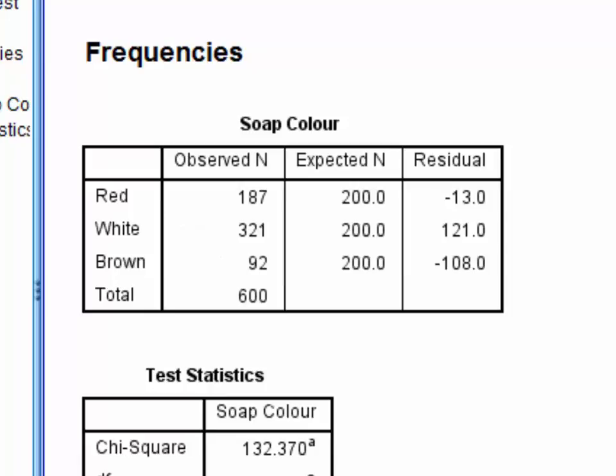Remember that if all three colors were equally popular, we would expect about 200 people to choose each color, and these are the expected frequencies which are reported here. The final column of the first table reports the differences between the observed and expected frequencies, and these are referred to as residuals.